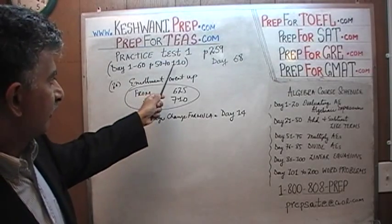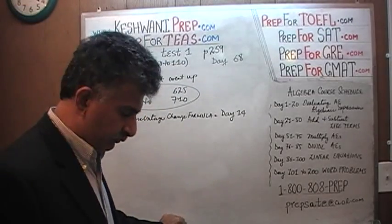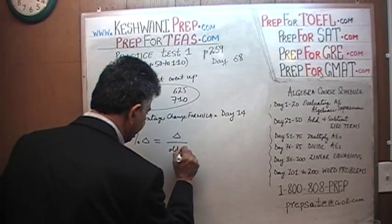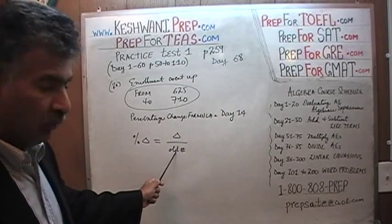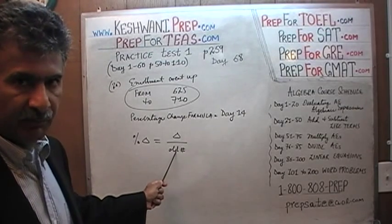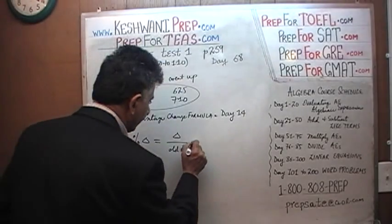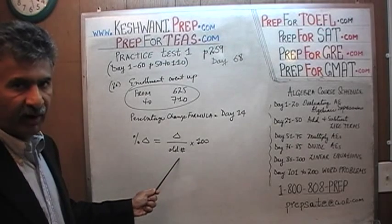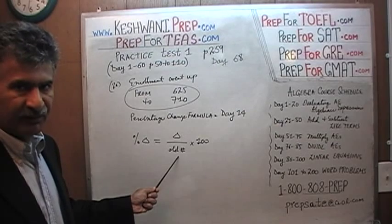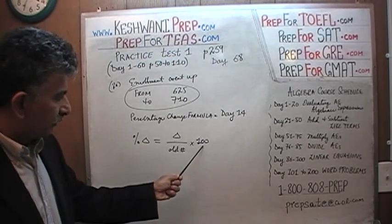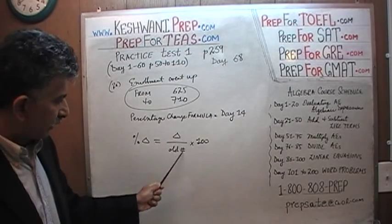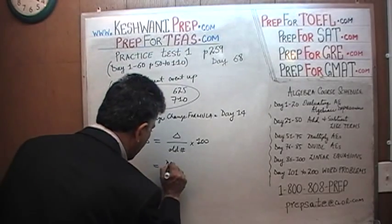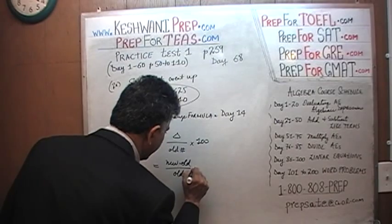Day 1 through 60, from page 50 to 110. On day 14, we learned what is known as the percentage change formula, which goes like this: percentage change equals the change divided by the old number — the number we started out with — sometimes referred to as the initial number, initial quantity, or starting number — times 100. We multiply by 100 because otherwise, taking the ratio of change over initial number gives us a fraction, like 0.75. And 0.75 is 75%, so we convert by multiplying by 100. The change is defined as the new number minus the old.